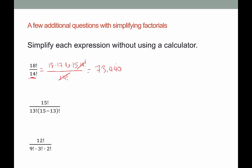For the second one, we have a little bit of work to do first. We need to say 15 minus 13 is 2. So now what we have is 15 factorial divided by 13 factorial times 2 factorial. I'm going to expand 15 factorial: 15 times 14, and then write 13 factorial, because that's going to simplify with the 13 factorial in the denominator. Cross those out. Now expanding 2 factorial, it's just 2 times 1. The 2 simplifies with the 14, giving 7. And then 15 times 7 is 105.